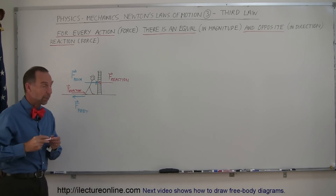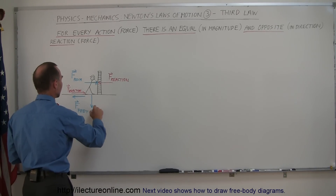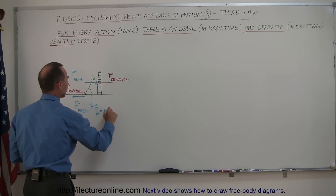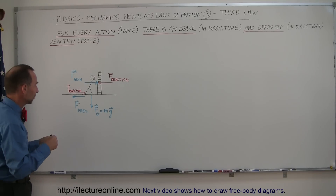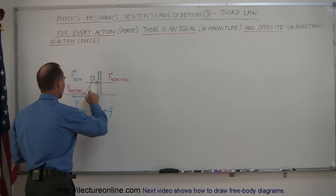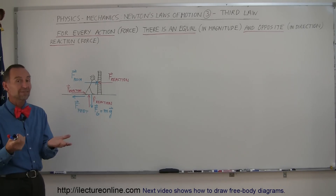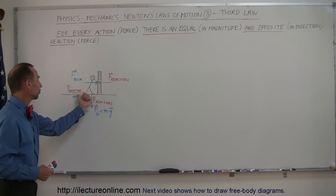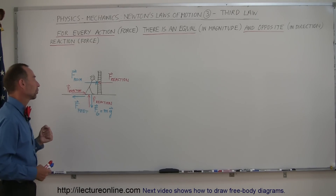There's one more: the weight of the person pushing down on the ground — the force due to gravity, F sub G, which equals the mass of the person times the acceleration of gravity. Again there is a reactionary force: the ground pushing back against the person. So in the simple case of a person pushing against a wall, we have three examples of Newton's third law: the person pushes the wall, the wall pushes back; the feet push against the ground, the ground pushes back; the weight pushes against the ground, and the ground pushes back.